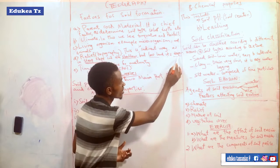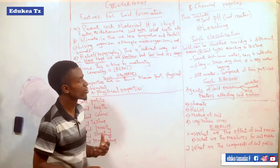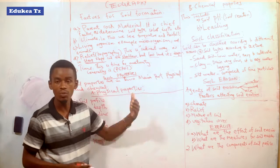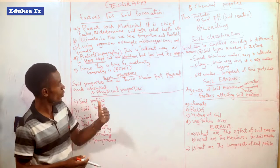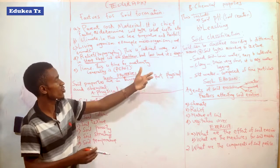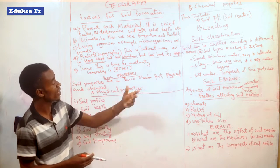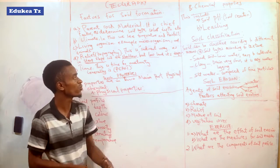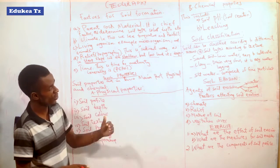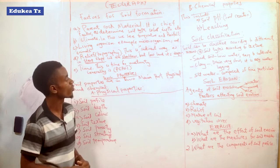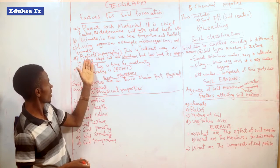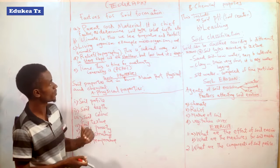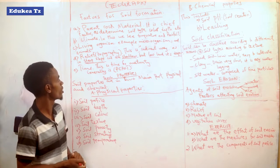Also in lowlands, why is the soil deeper? Because in lowland areas, deposition takes place. If there is deposition, the soil will be deeper and it will be productive for agriculture. So relief is among the factors that can help the soil to be formed.